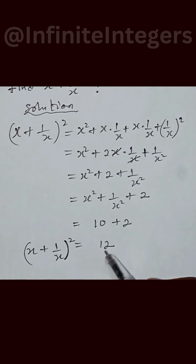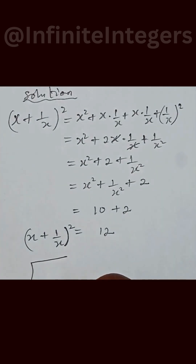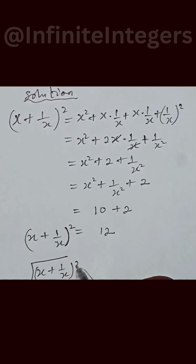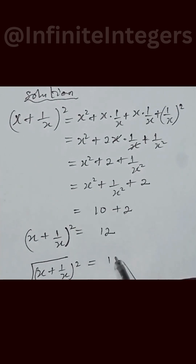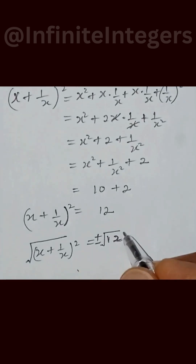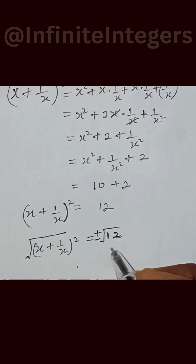We can take the square root of both sides. The square root of x plus 1 over x, squared, equals the square root of 12. Therefore x plus 1 over x equals plus or minus the square root of 12.